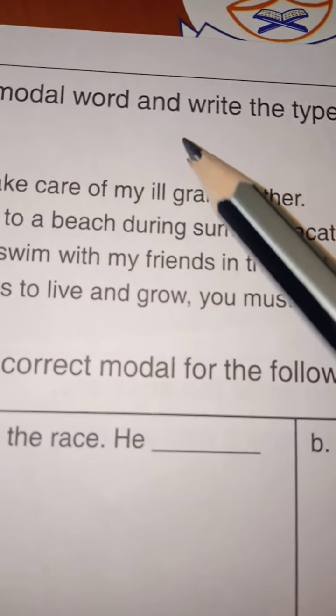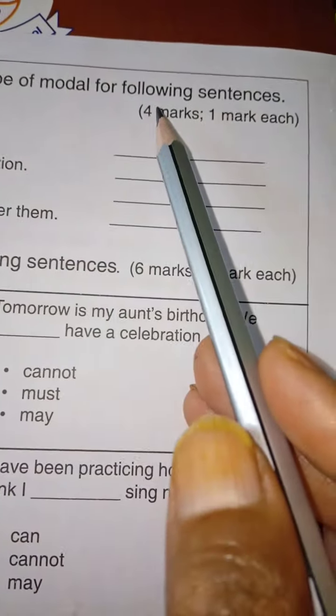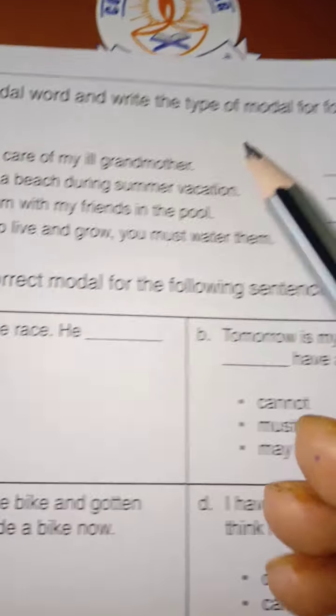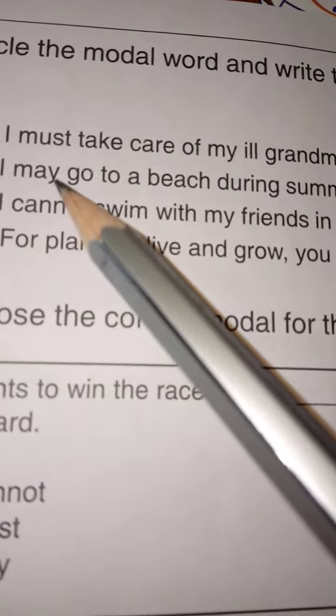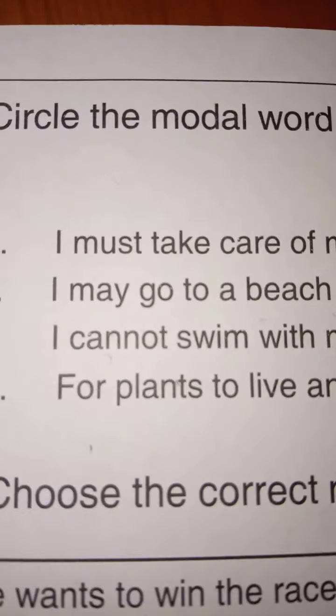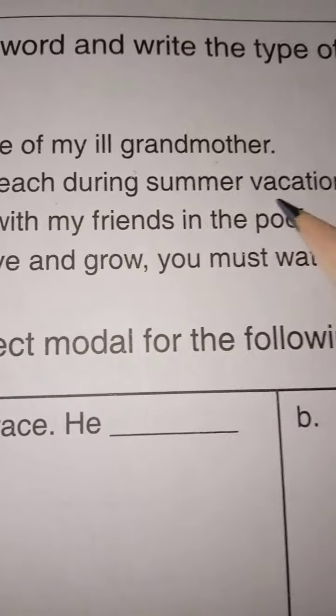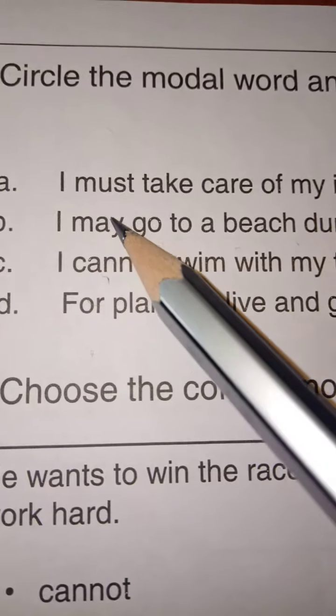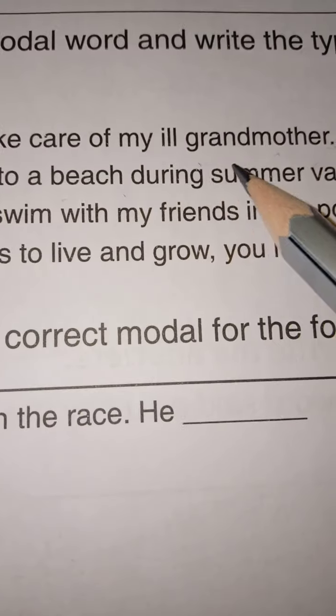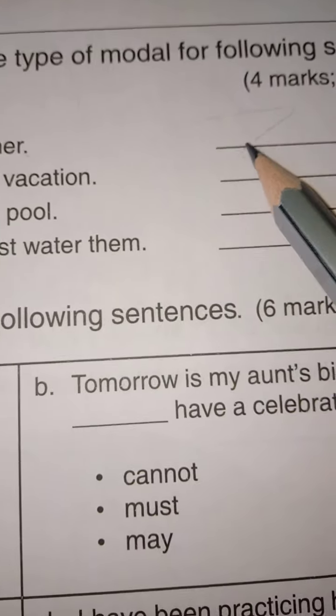Circle the modal words and write the type of modal for the following sentence. Now, I told you what are modal words. You have to write what type it is. I must take care of my ill grandmother. So, must. It is an obligation. You write it here. An obligation.